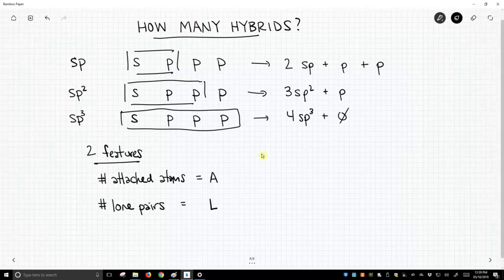Well there is not a simple answer, but normally, and I mean like 95% of the time, normally, the number of hybrids that you need will equal A plus L. So if A plus L equals four, you need sp3 hybridization because that's the hybridization that gives you four hybrids.